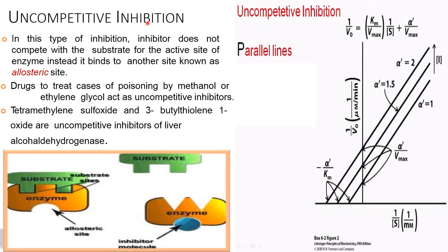Uncompetitive inhibition: in this type, the inhibitor does not compete with the substrate for the active site. Instead, it binds to another site known as the allosteric site. Drugs used to treat poisoning by methanol or ethylene glycol act as uncompetitive inhibitors.